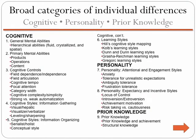In this table, you see Jonassen and Grabowski's typology of individual differences that impact learning. Using their table, individual differences can be classified into three broad categories of cognitive, personality, and prior knowledge.